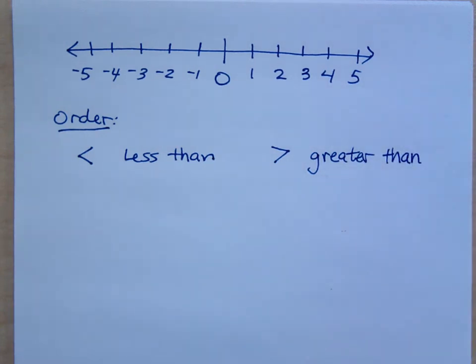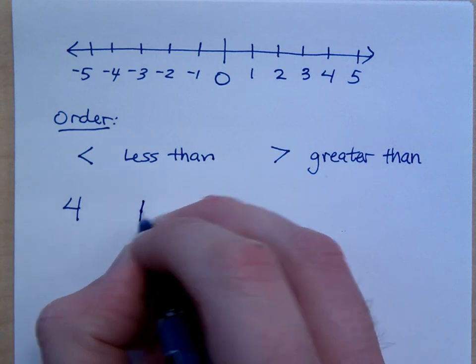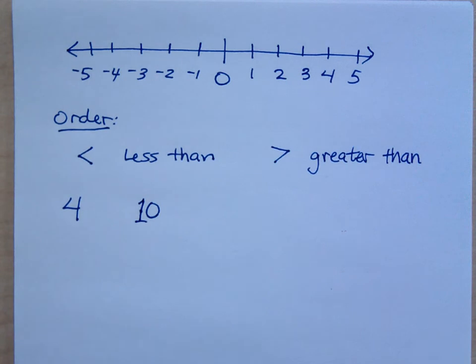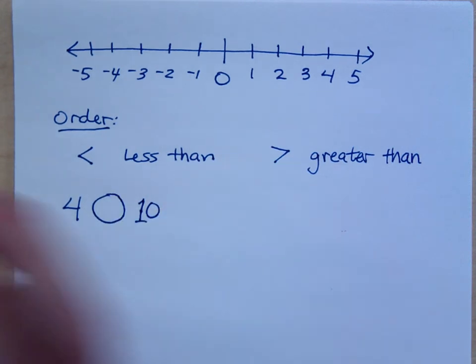You guys know about arranging things. If you've ever been told, get in order from shortest to tallest, maybe you're taking a photo, you know how to arrange things. So if I were to have this number, 4 and 10, what is the symbol that I would put between them to tell me the order? Is it going to be greater than or less than? It's less than, right?